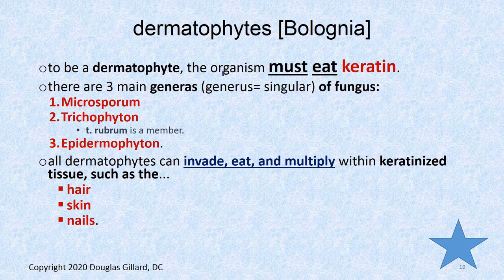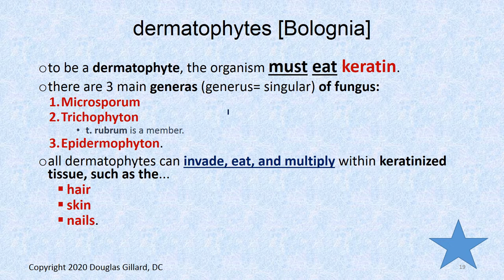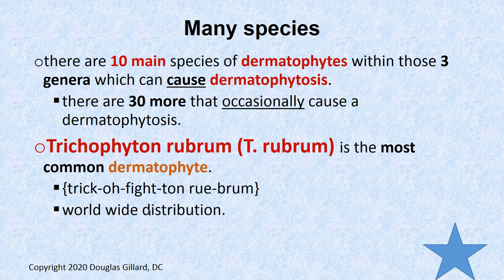So to be a dermatophyte, you have to eat keratin. There are actually three families or genera of these fungi: Microsporum, Trichophyton, and Epidermophyton. Those are the three main keratin-eating families. All members of these families invade and multiply within keratinized tissue — basically the epidermis, hair, skin, and nails. There are 10 different species of dermatophytes within those three genera that primarily cause dermatophytosis, and about 30 additional ones that sometimes cause them.